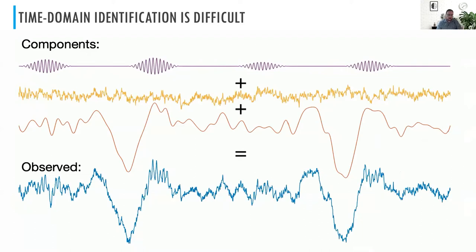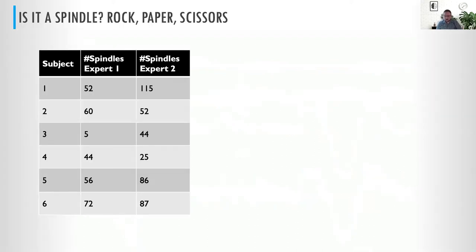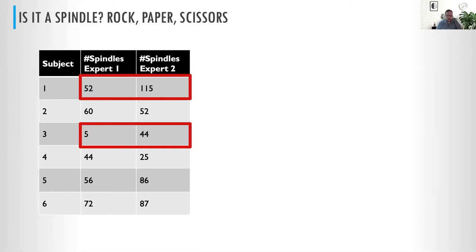So it's a question of saying: when we talk about spindle phenomenology, are we talking about a true underlying waveform, or just the things easiest for people to see by eye in waveform traces? Here are two experts looking at the same six segments, and you can see that when they count the number of spindles, there are vast differences in the amount these experts report.